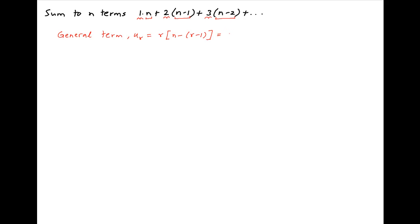Therefore, UR is equal to r times n minus r plus 1, which is equal to r times (n plus 1) minus r squared.